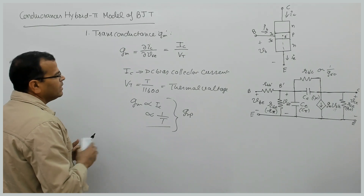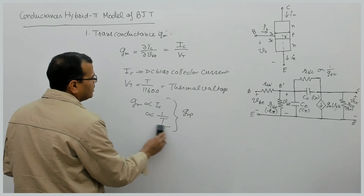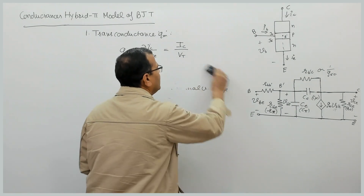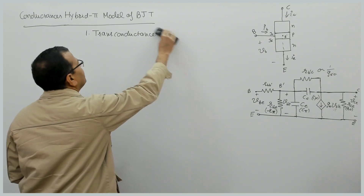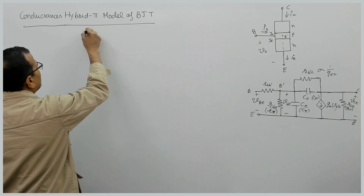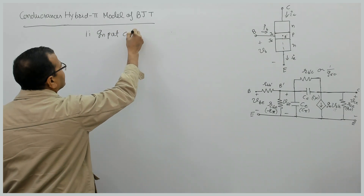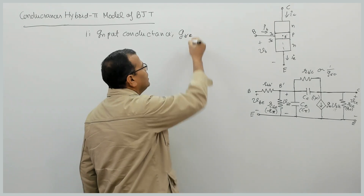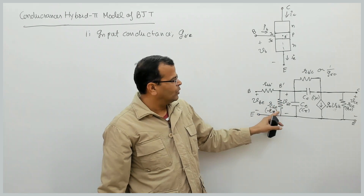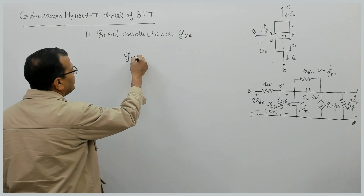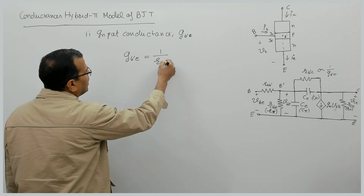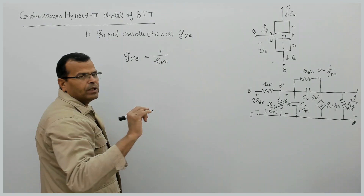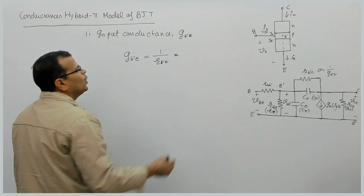Now let us talk about the second conductance. This is transconductance. The second conductance associated with BJT is input conductance. The second conductance is GB dash E — the conductance due to input resistance. Input conductance GB dash E is equal to 1 by input resistance RB dash E, and this is given by 1 by r pi. Please remember this expression.